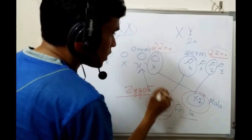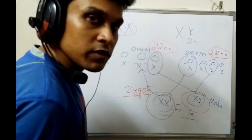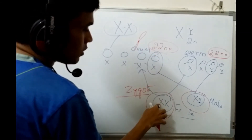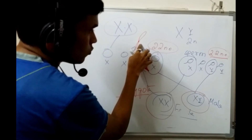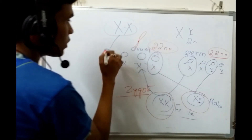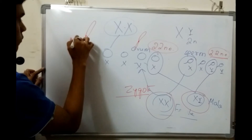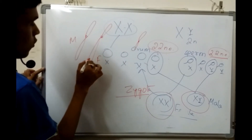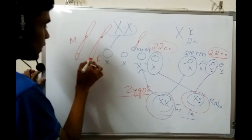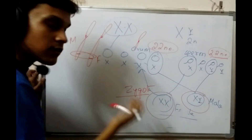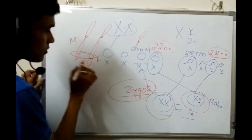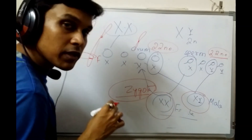One chromosomal set comes from the mother and another from the father. For example, one chromosome 22 comes from the mother and another chromosome 22 comes from the father. If the allelic forms of the chromosomes from mother and father are the same, the individual is homozygous; if the allelic forms are different, the individual is heterozygous. You can relate the '-zygous' term with 'zygote' to remember this.